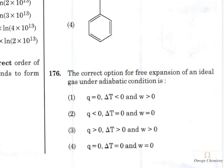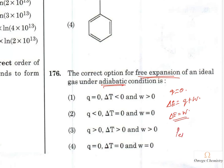Question 168: For free expansion of an ideal gas under adiabatic conditions: adiabatic means q = 0. By the first law, ΔU = q + w. Since q = 0, ΔU = w. Free expansion means p_ext = 0, so w = 0 as well. Therefore q = 0, w = 0, and ΔU = 0. This option is correct.